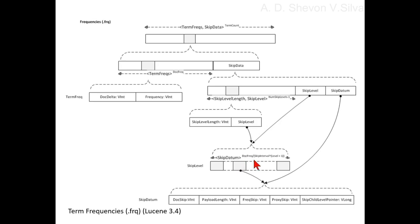Divided by skip interval to the power of level plus 1, where level starts at 0. All the skip levels are appended together, preceded by the skip level length. The last level does not need a skip level length since there are no more levels below it, so it is skipped.